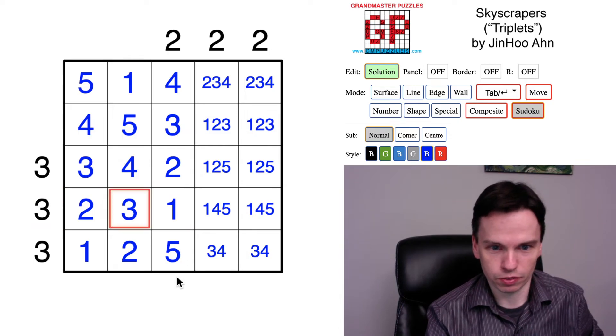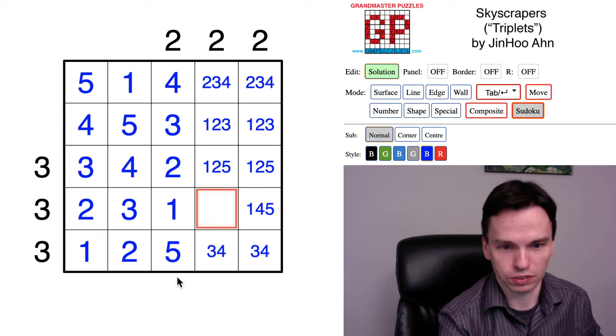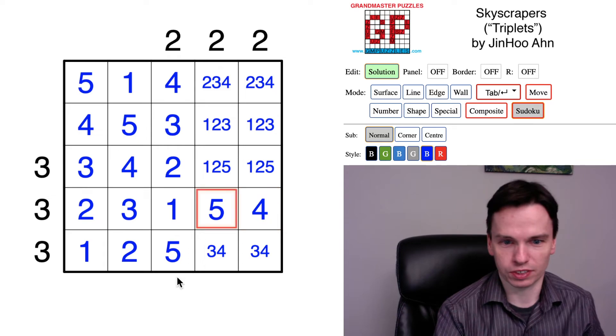This three in the fourth row sees two and three. And if a four were in the cell, it would be too large. We'd have four total building scenes. So the five must come before the four. So the four is hidden.